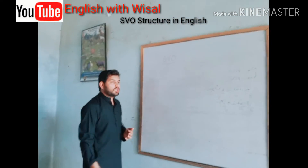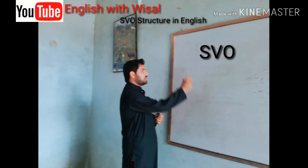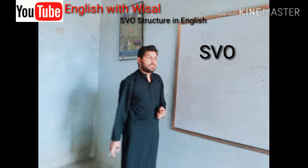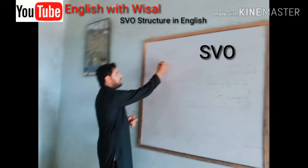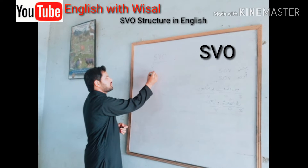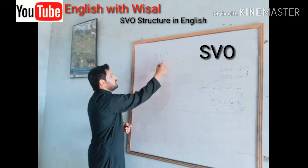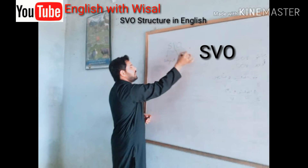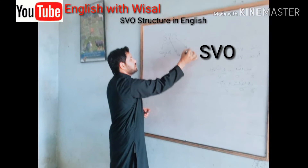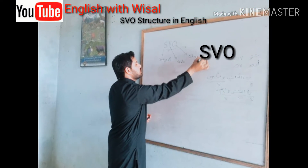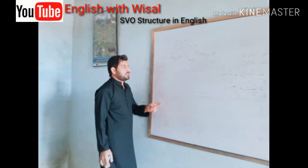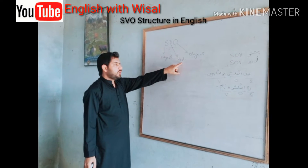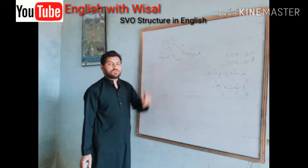But if we come to English, the structure of English is S-V-O. What does it mean? S means subject, V means verb, and O means object. So in English, first of all we will use the subject, then we will use the verb, and then we will use the object.